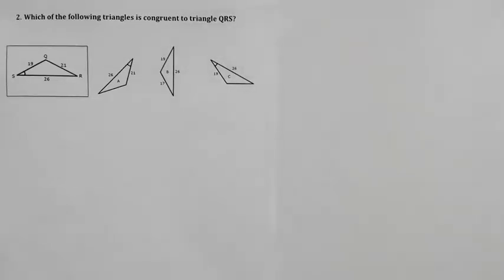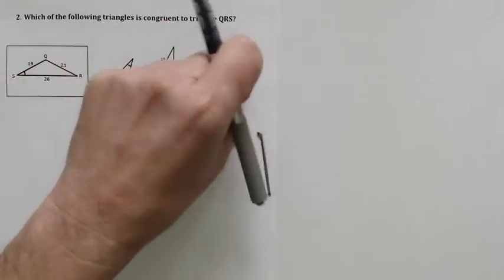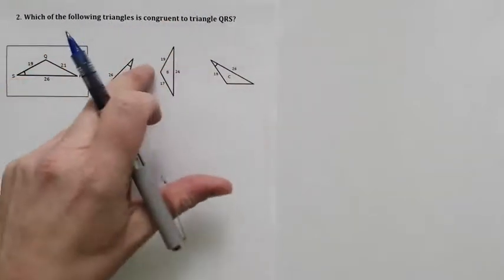Hey, we're looking at congruency number two. Which of the following triangles is congruent to QRS? Here we have QRS and three other triangles, and we want to know which one of these is congruent to that one right there.